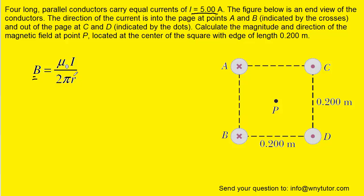What's important first to understand is the value of r, which is going to be the distance from the wire to point P. Now we can see that all four wires are the same distance away from point P. We just have to find that distance.